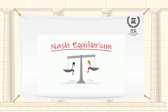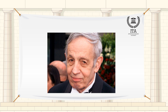Overall, an individual can receive no incremental benefit from changing actions assuming other players remain constant in their strategies. A game may have multiple Nash Equilibria or none at all. This concept is named after its inventor, John Nash, and is incorporated in multiple disciplines ranging from behavioral ecology to economics.